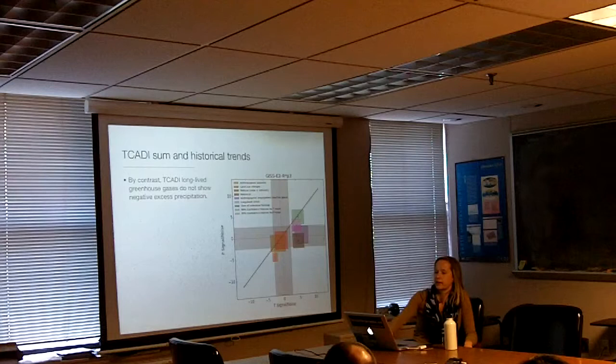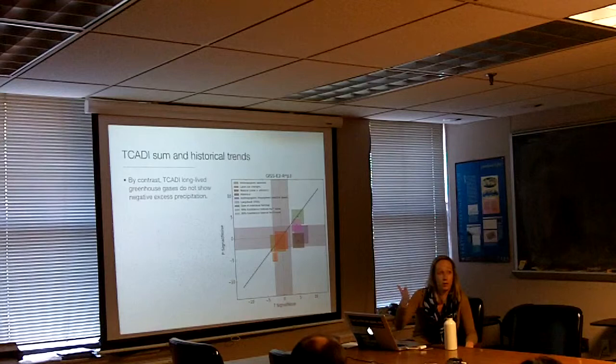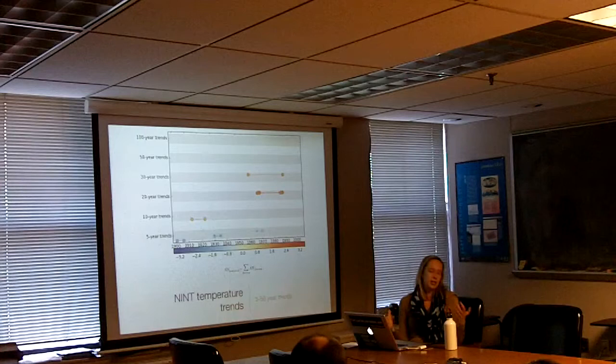By contrast, in TCAT, the long-lived greenhouse gases do not show negative excess precipitation. This green box looks like it's basically on the slow-response line — it's not offset below like it was in NINT. And that's going to turn out to be significant.